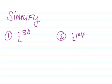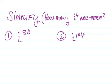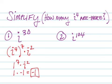For example, I want to simplify i to the thirtieth. What I'm really trying to do is figure out how many i to the fourths are there. i to the thirtieth is i to the fourth to the seventh power, times i squared. i to the fourth is 1, and 1 to the seventh is 1. i squared is negative 1, so the whole thing boils down to negative 1.